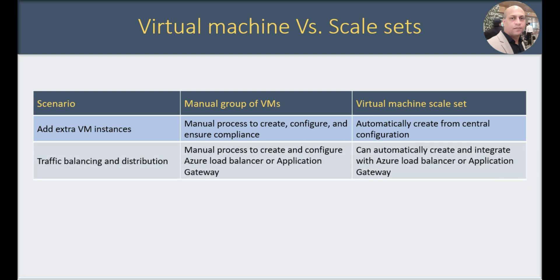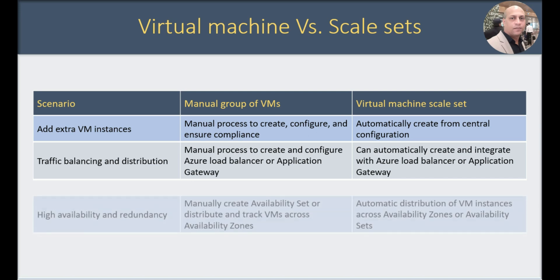If you are trying to balance traffic and distribution, it's also a manual process for you to create and configure Azure load balancer or application gateway. Whereas in a VM scale set, you can automatically create and integrate Azure load balancer or application gateway.